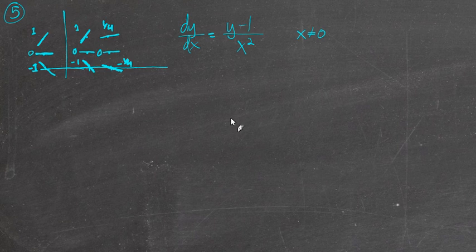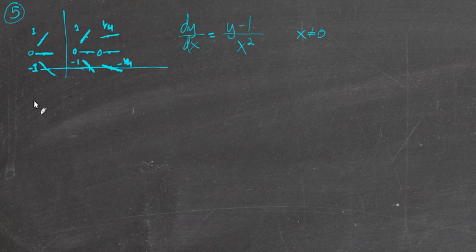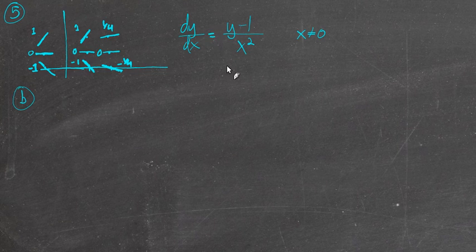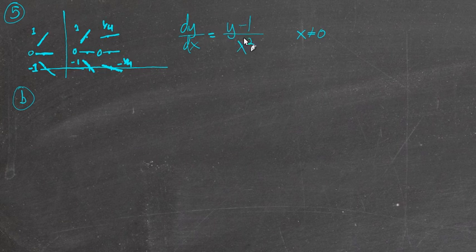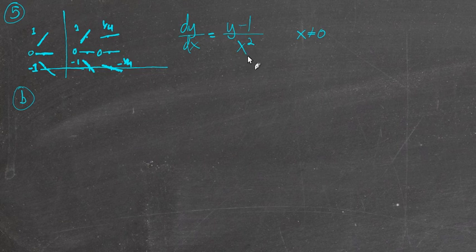So find the particular solution for this differential equation, if the initial condition is that f(2) is equal to 0. This is part B. To remind you, the solution to a differential equation is basically a function that you can plug in for y and dy/dx — that when you plug in y and dy/dx, both sides of the equation are the same thing.